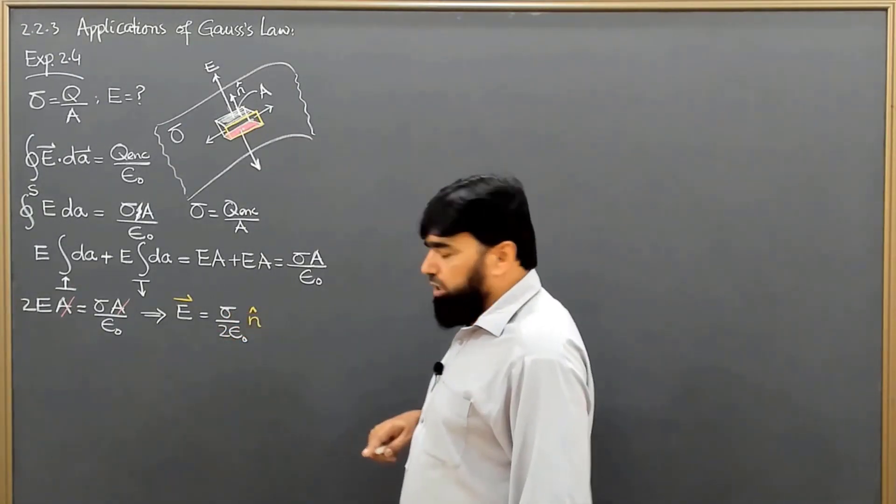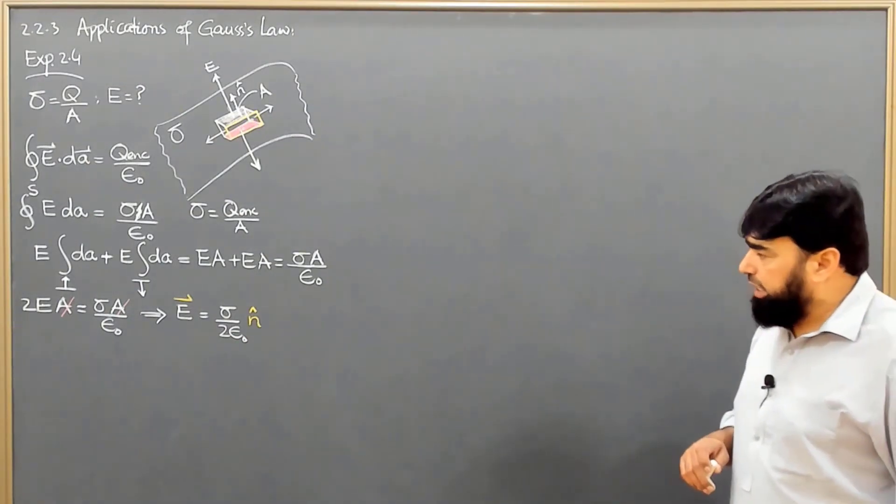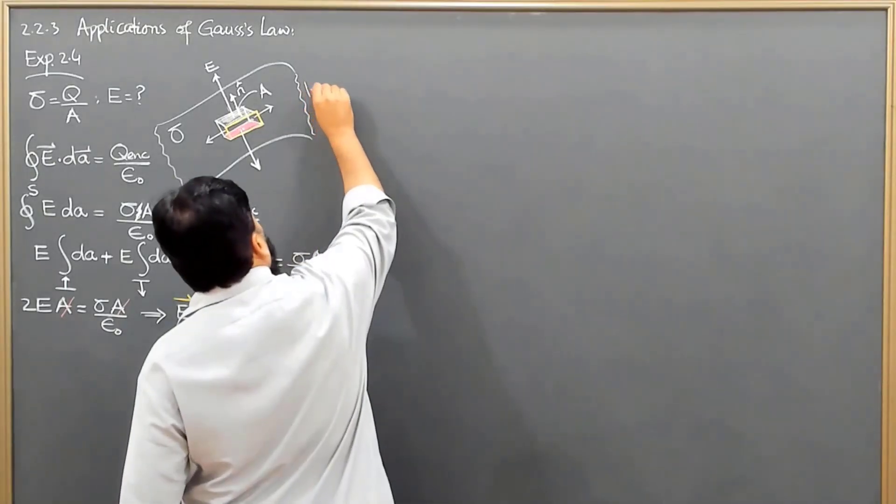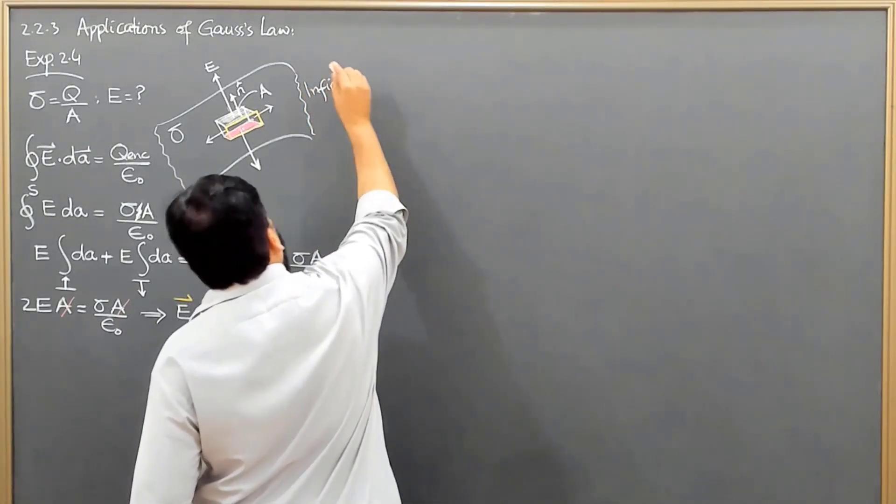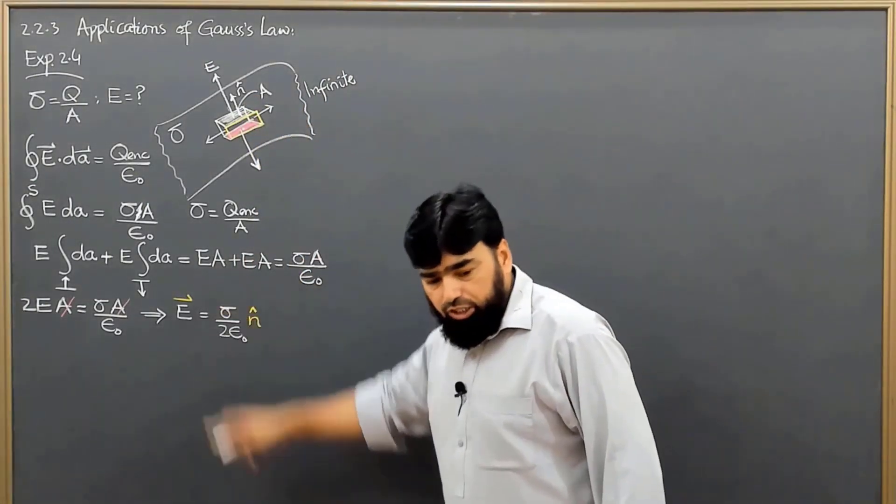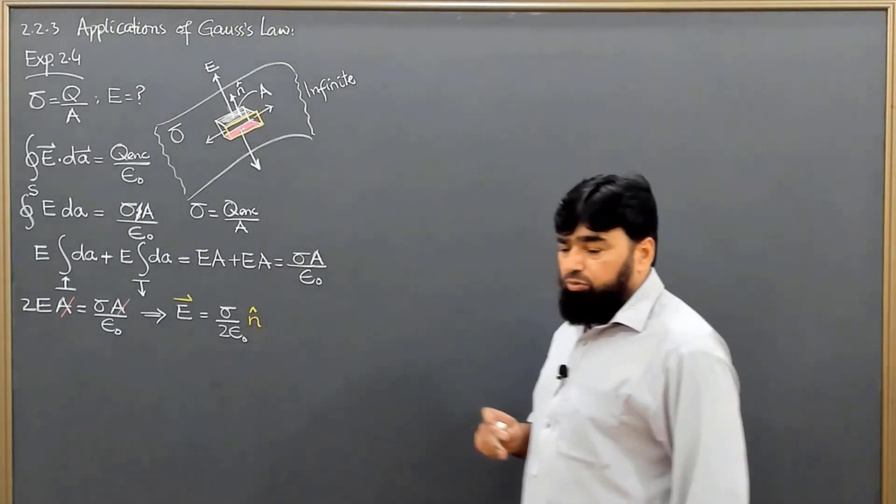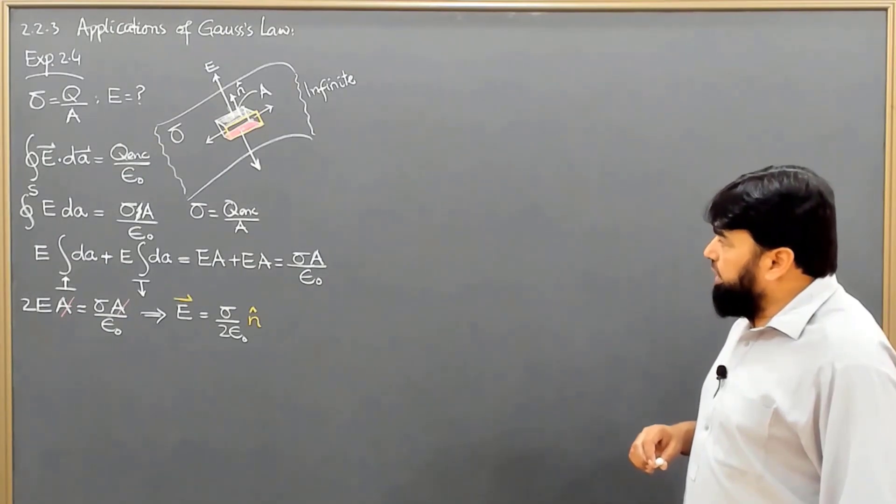Sigma is constant, 2 epsilon naught is constant, so electric field is constant. The reason for this is that we have considered an infinite sheet of charge. This is not finite. If this would be finite, we would have a decreasing field. Since this is infinite, that's why we have a constant field and it will not be decreasing.